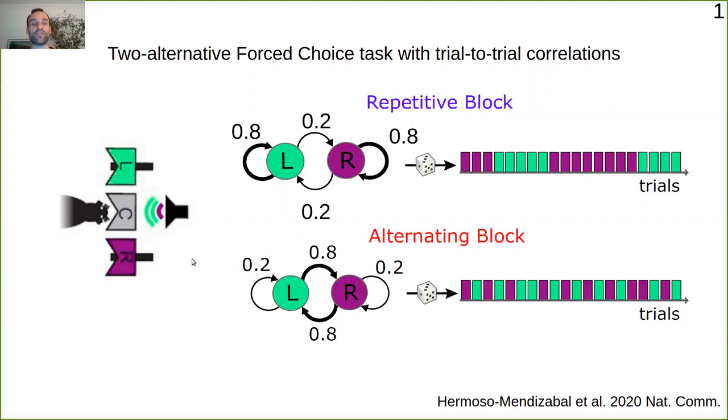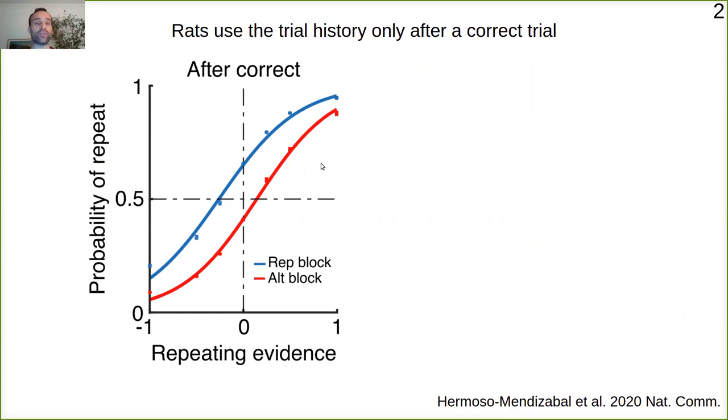So the question here is how rats will combine these two sources of information. Hermoso Medizabal et al. last year showed that rats were able to use this trial history after correct trials. This can be seen in these psychometric curves in which we plot the probability of repeating as a function of the evidence for the repetition.